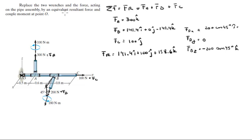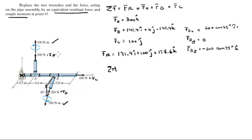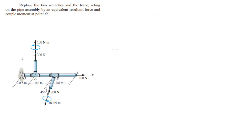Now that we have the equivalent resultant force, we need to find the couple moment. The couple moment is the sum of all moments on the pipe assembly. We have the 100 N·m moment, the 180 N·m moment, plus the moments created by F_A and F_B. F_C creates no moment about O because it aims straight away from it. So in total there are four moments to find.